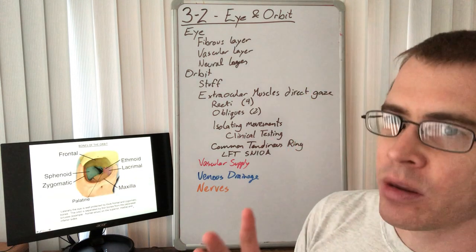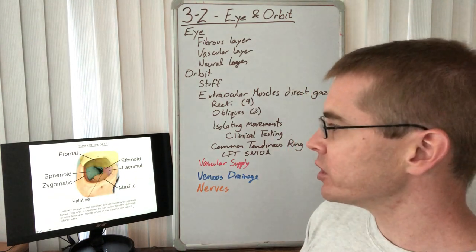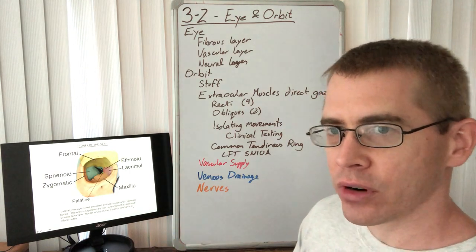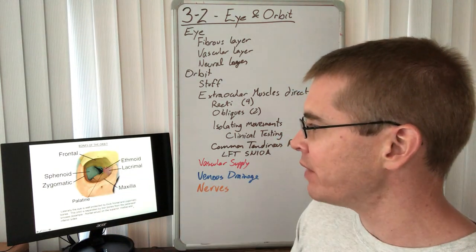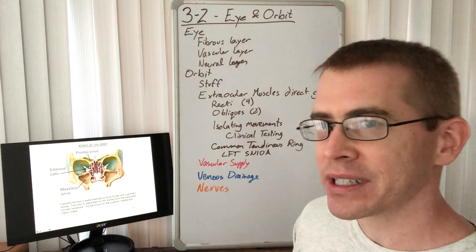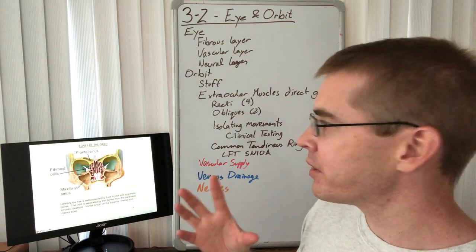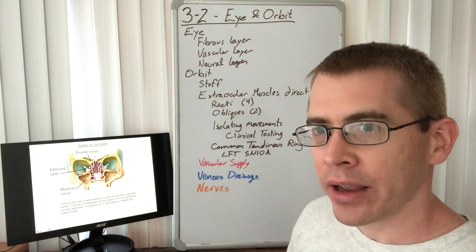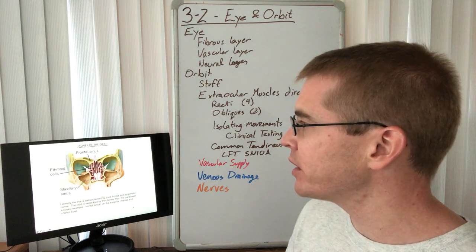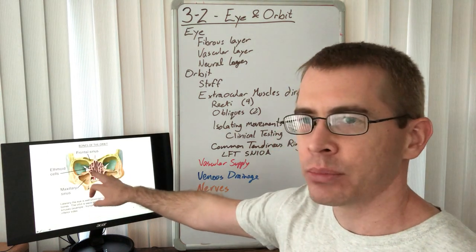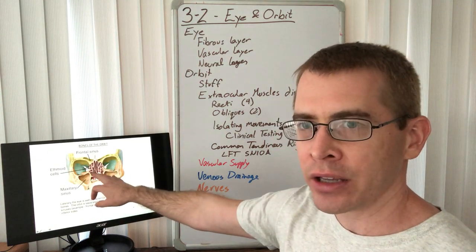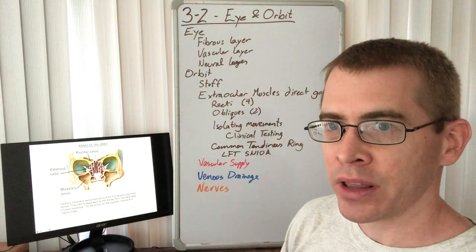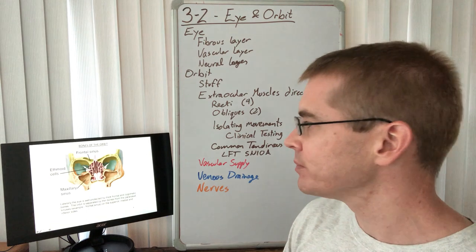Now let's talk about the orbit. The orbit is composed of a number of different bones that form its borders. Many of these bones are very solid with thick structures to protect the eye and the associated arteries and nerves, except for the central medial portion, which is composed of the ethmoid bone and the ethmoid air cells.